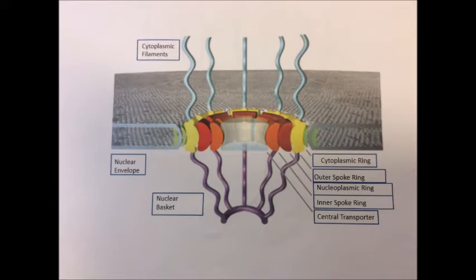The next four labels show the cytoplasmic ring, the outer spoke ring, the nucleoplasmic ring and the inner spoke ring. These all make up the structure known as the spoke ring assembly.